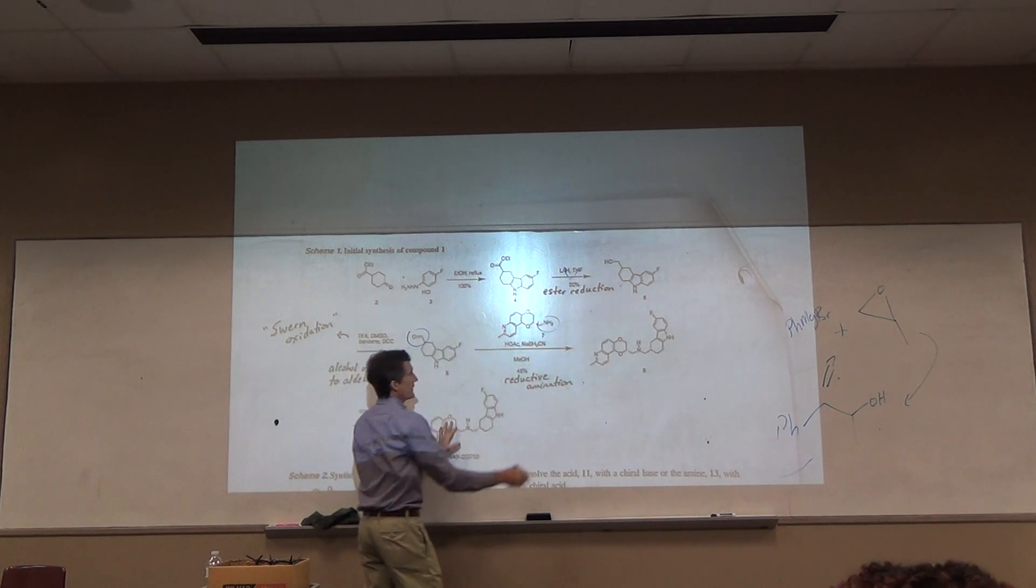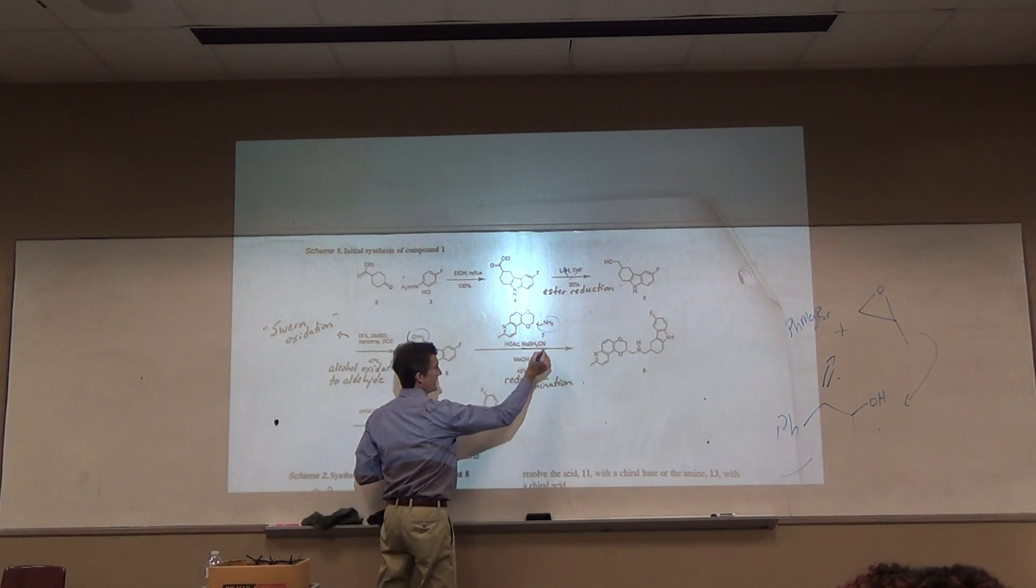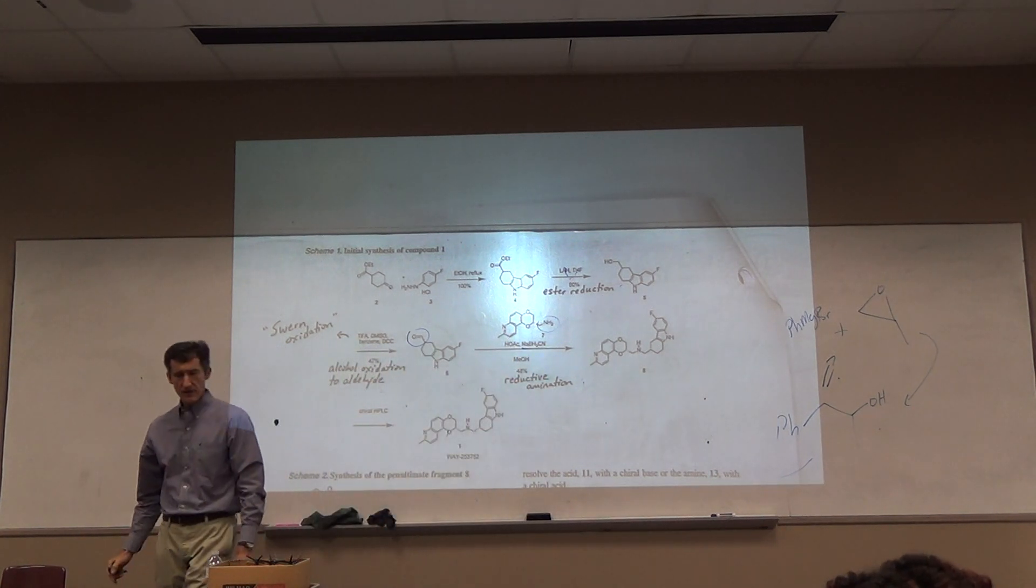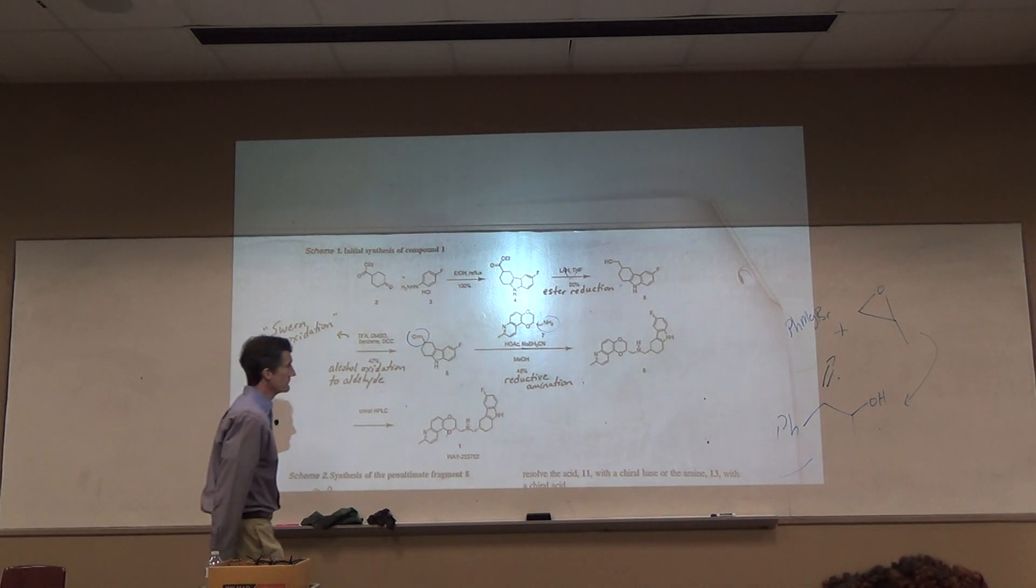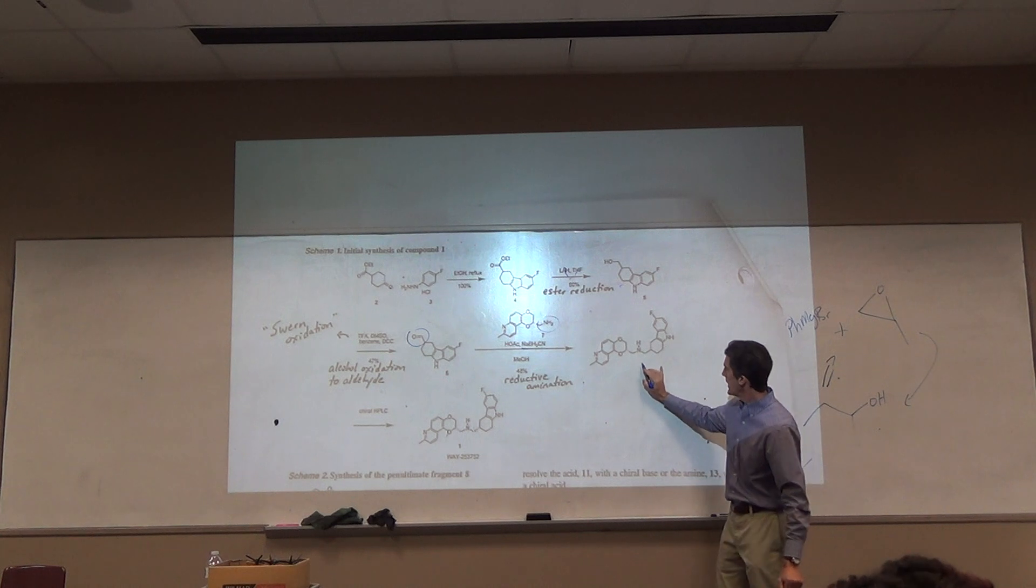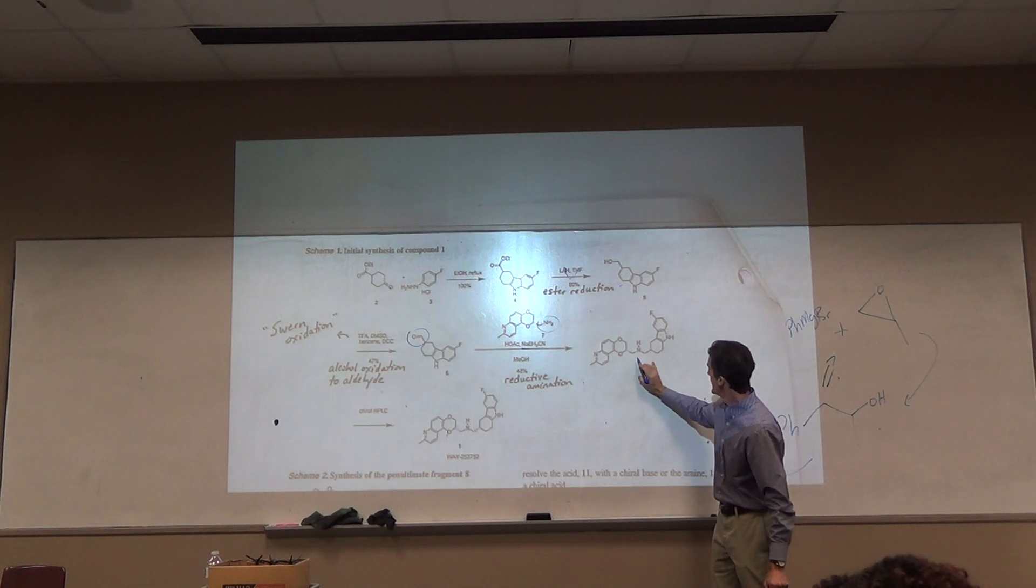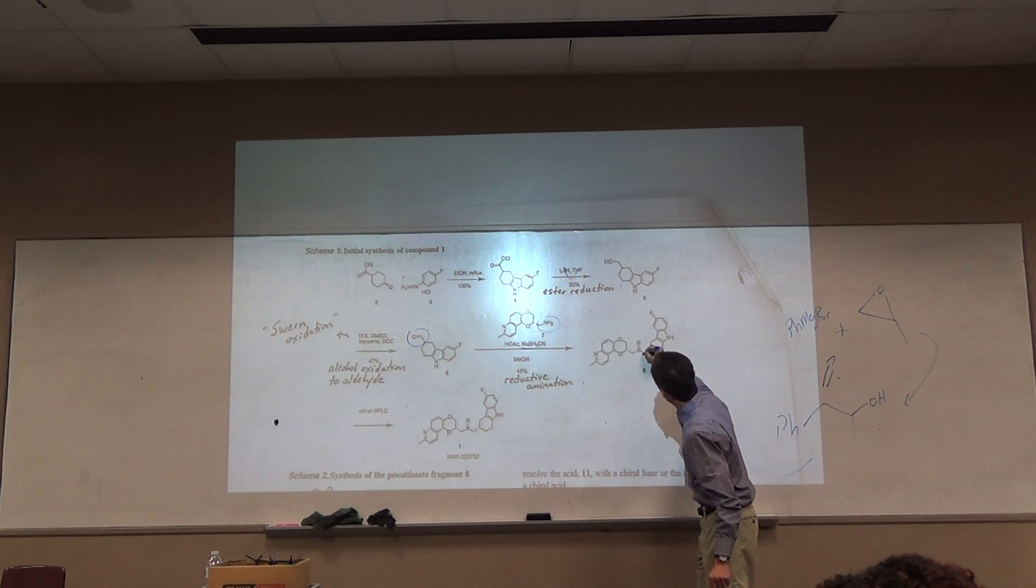Right here, we've got an aldehyde, we've got a primary amine, these are reactive, forms imine, sodium cyanoborohydride, they're using acetic acid and methanol. Acetic acid may be acting as an acid catalyst for the formation of the imine, it's not a strong acid. And what are they doing? They're making this bond right, that's kind of like an indirect alkylation, making that bond right there, right?